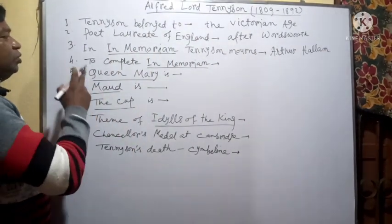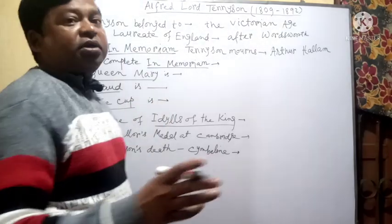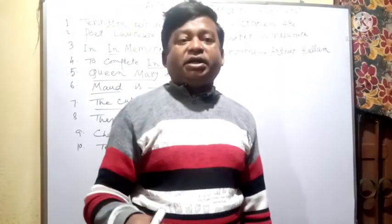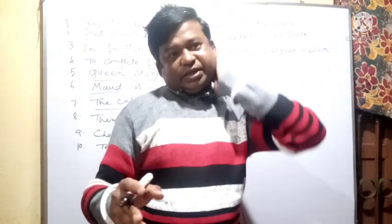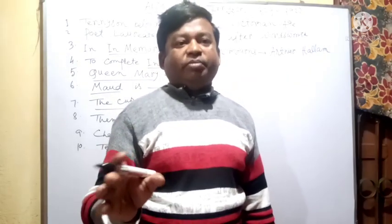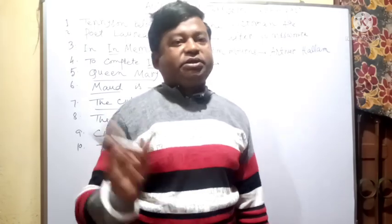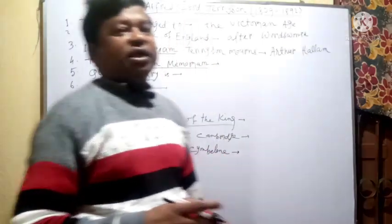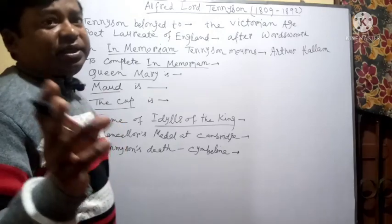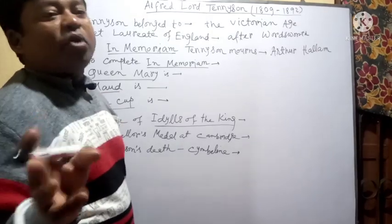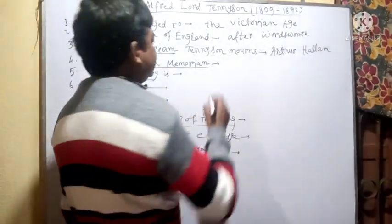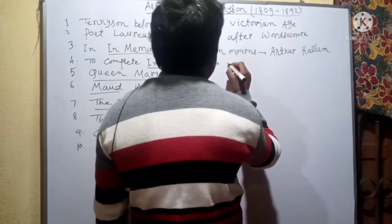Next question, question number 4: How many years did Tennyson take to complete the poem In Memoriam? The answer is: Tennyson took 17 years to complete In Memoriam.